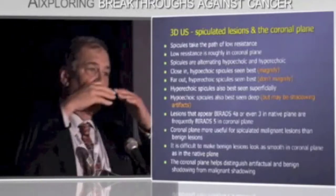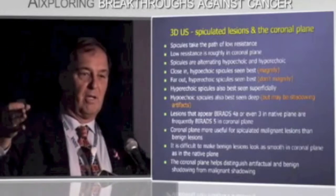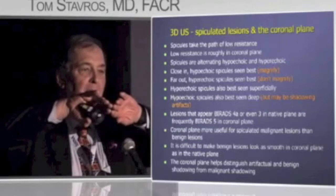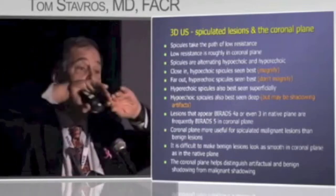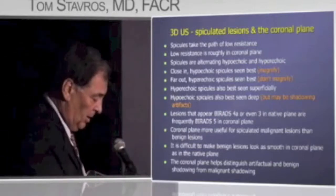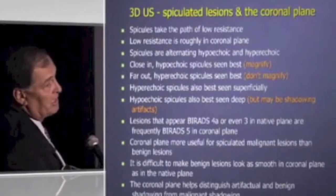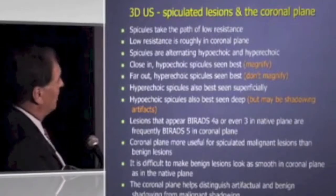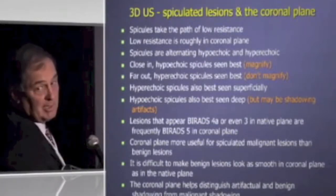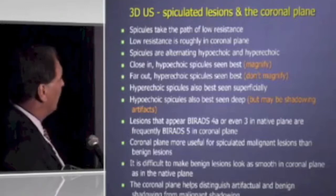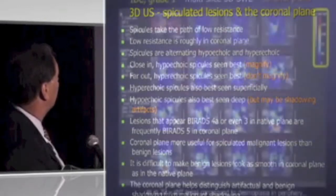Lesions that appear BI-RADS 4A or sometimes even 3 can be upgraded to BI-RADS 5 in the coronal plane many times. So what you want to do in your distribution of BI-RADS is get those middle cases out — where your positive biopsy ratio is low — and get them to the ends: the definitely normal end or the definitely positive end. You want to get people out of those middle categories to the end categories. It's more useful in stellate lesions than circumscribed lesions. It's really hard to make a fibroadenoma look as smooth in the coronal plane as in the native planes, so it's mostly good for stellate, but it can really help you see the DCIS components extending to the surrounding tissues.